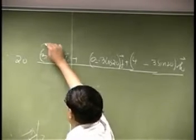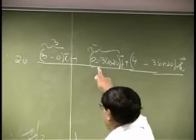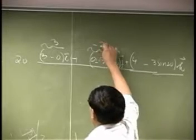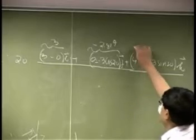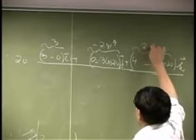Then this component is 3, this component is negative 3 cosine 20. So that is 2.819. This is 4 minus 3 sine 20, which is 2.974.